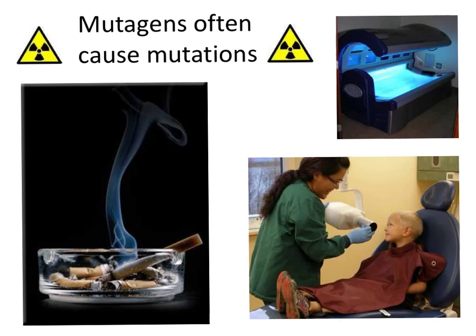The causes of these DNA changes are referred to as mutagens. They are chemicals or types of radiation that can cause mutations. For example, it's well known that cigarette smoke has lots of toxins in it, and those toxins can cause lung cancer and other types of cancer. Similarly, tanning — whether out in the sun or in a tanning bed — exposes your skin cells to lots of radiation. When that radiation strikes your DNA molecules, it can cause a change in the letters.